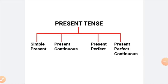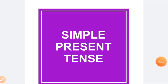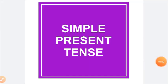Let us try to understand what the present tense is. The present tense is used to talk about an action that is currently going on. There are four types of present tense: simple present, present continuous, present perfect, and present perfect continuous.